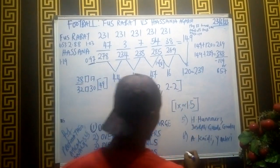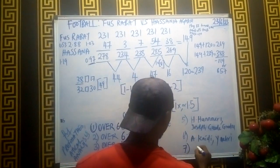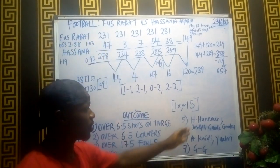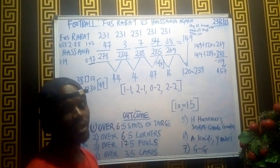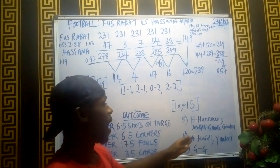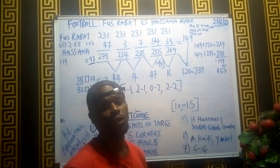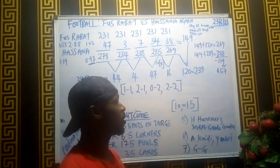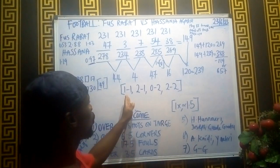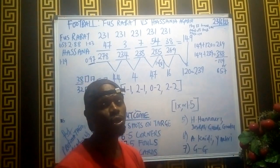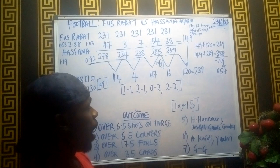The prediction is over 1.5, and it can also be a goal-goal. Players to watch for FCF Rabat are H. Hanori — to score or assist — and Joseph Grede to perform well, giving us a possible scoreline outcome of 1-1, 2-1, 0-2, or 2-2.